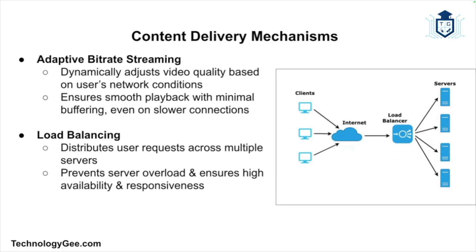Delivering videos to millions of users simultaneously requires sophisticated content delivery mechanisms. YouTube uses adaptive bitrate streaming to adjust video quality in real time based on the user's network conditions, ensuring smooth playback with minimal buffering even on slower connections. Load balancing distributes user requests across multiple servers to ensure no single server becomes overwhelmed, helping maintain high availability and responsiveness.